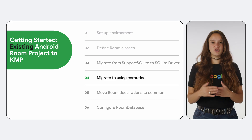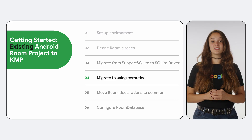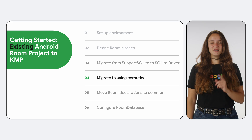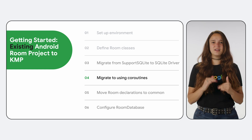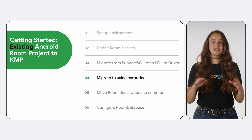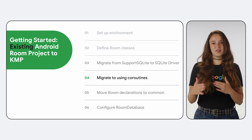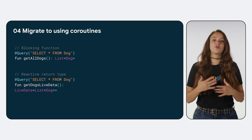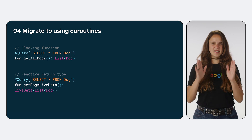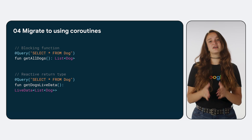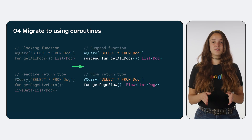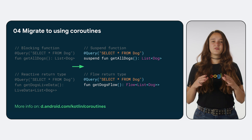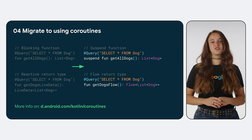In addition to migrating to the driver APIs, you will also need to migrate your project to use Coroutines. If your app is already using Coroutines, that's great and you can skip this step. If not, this will be the first big leap, and you might need to introduce some interoperability. The KMP version of Room relies on Coroutines to perform IO operations on the configured Coroutine context. This means you need to migrate any blocking DAO functions to suspend functions. Additionally, some reactive types such as LiveData are not KMP-compatible and must be migrated to Coroutine Flows. For more information on migrating to Coroutines, check out our Android Developer Coroutines guide.